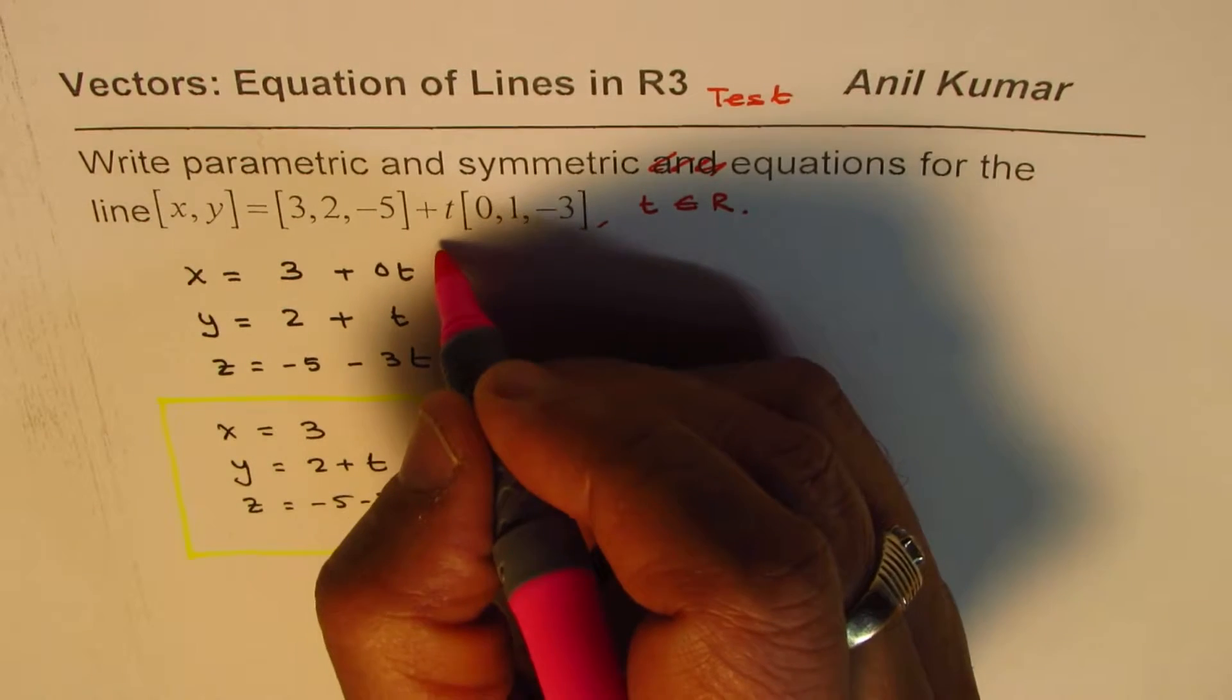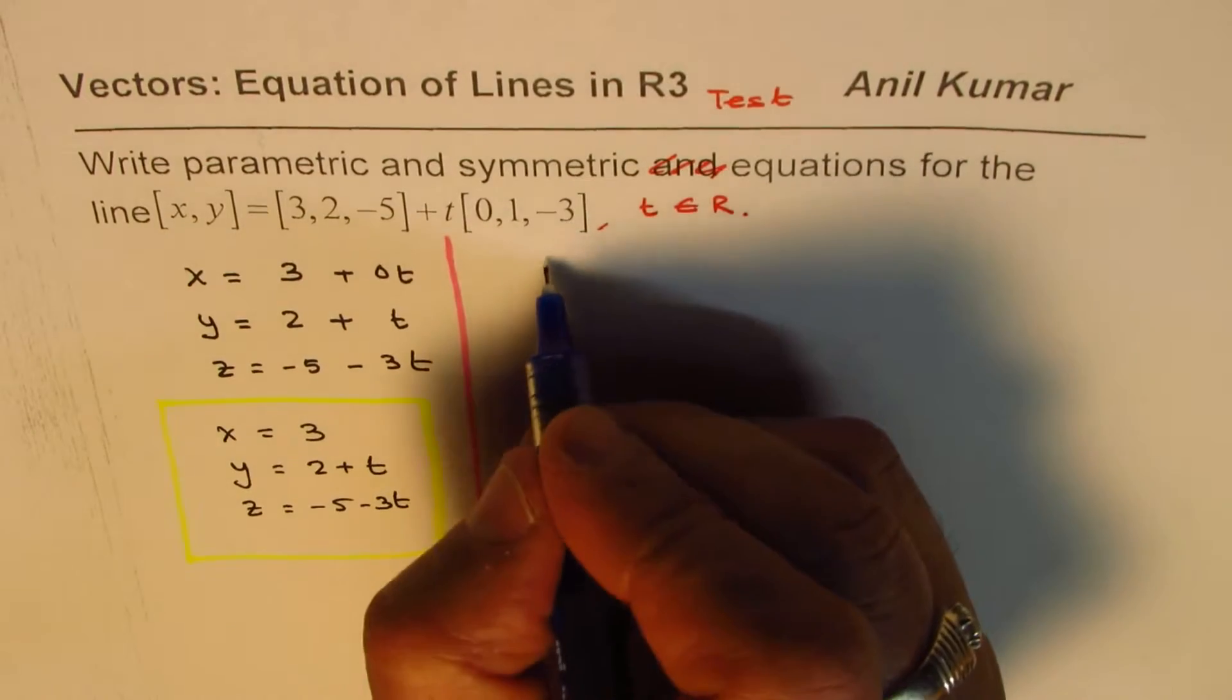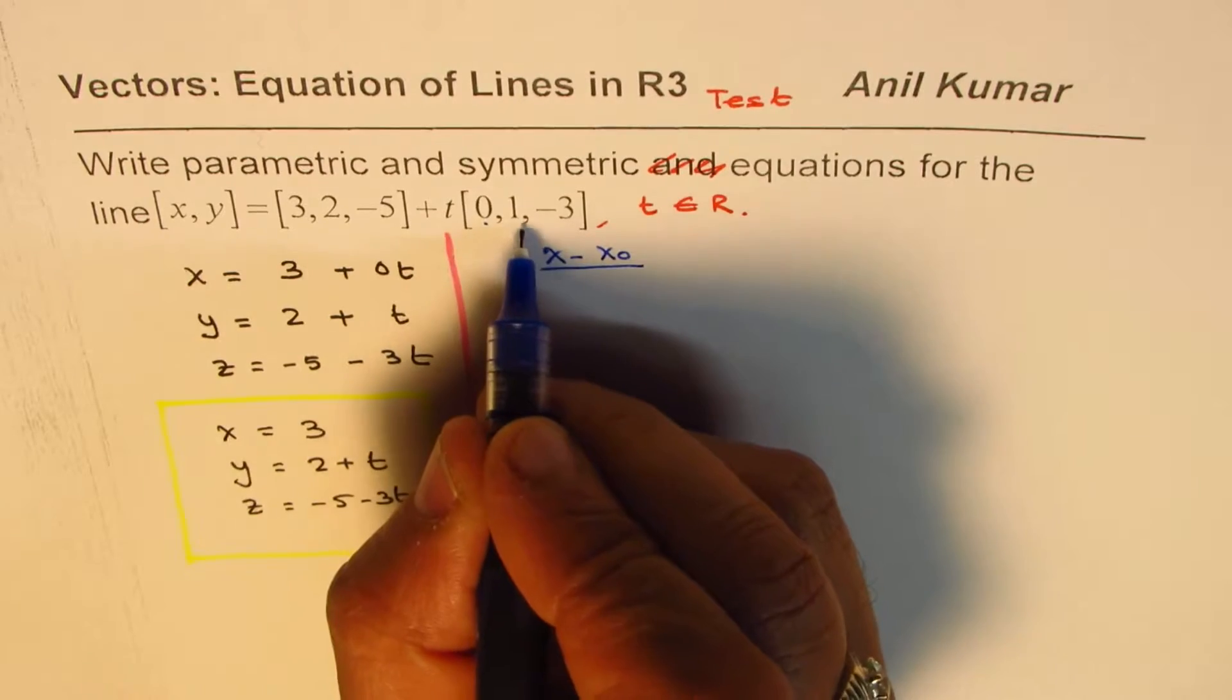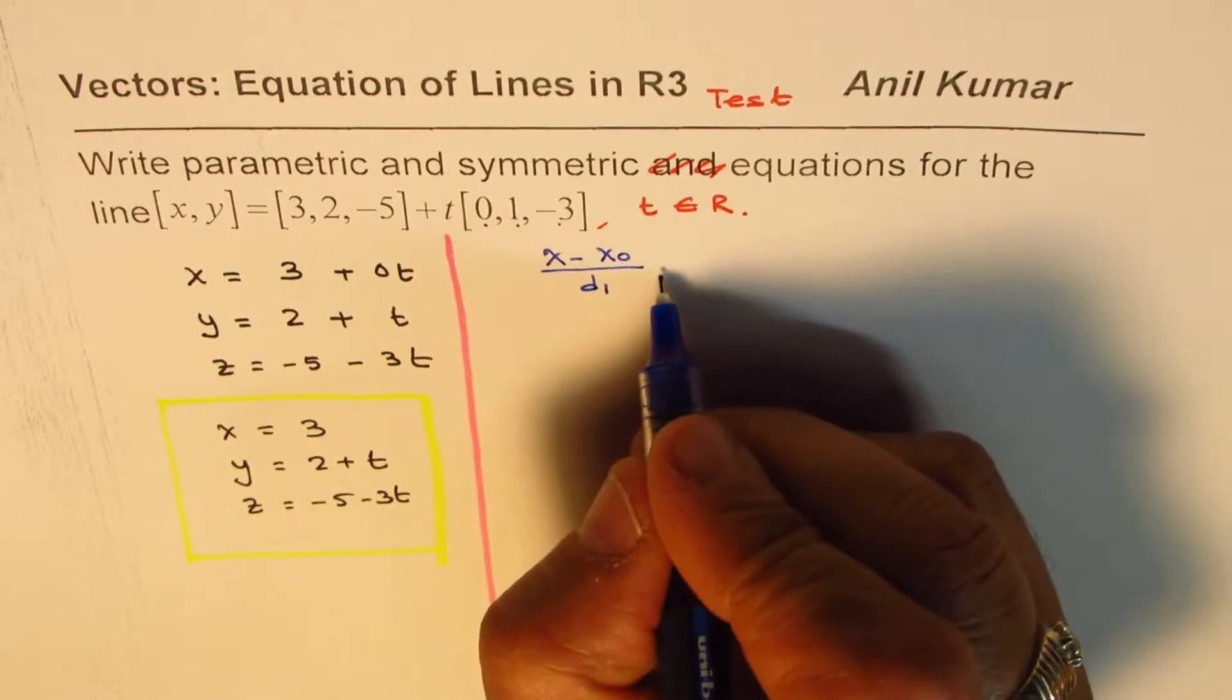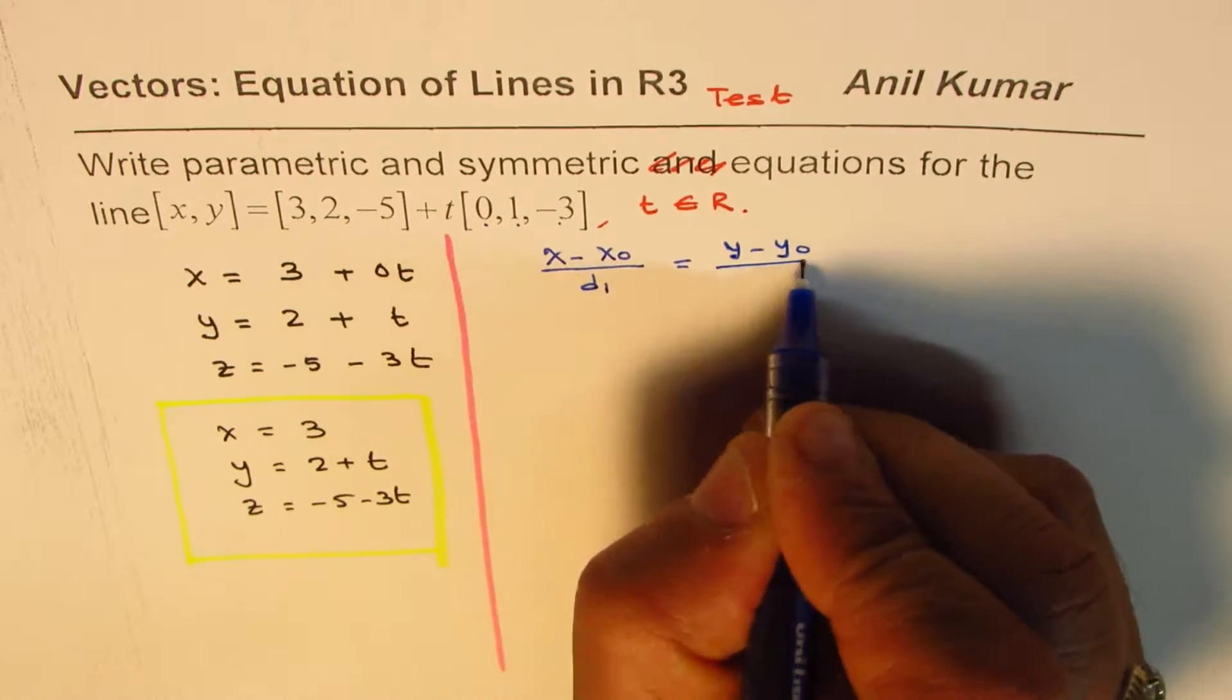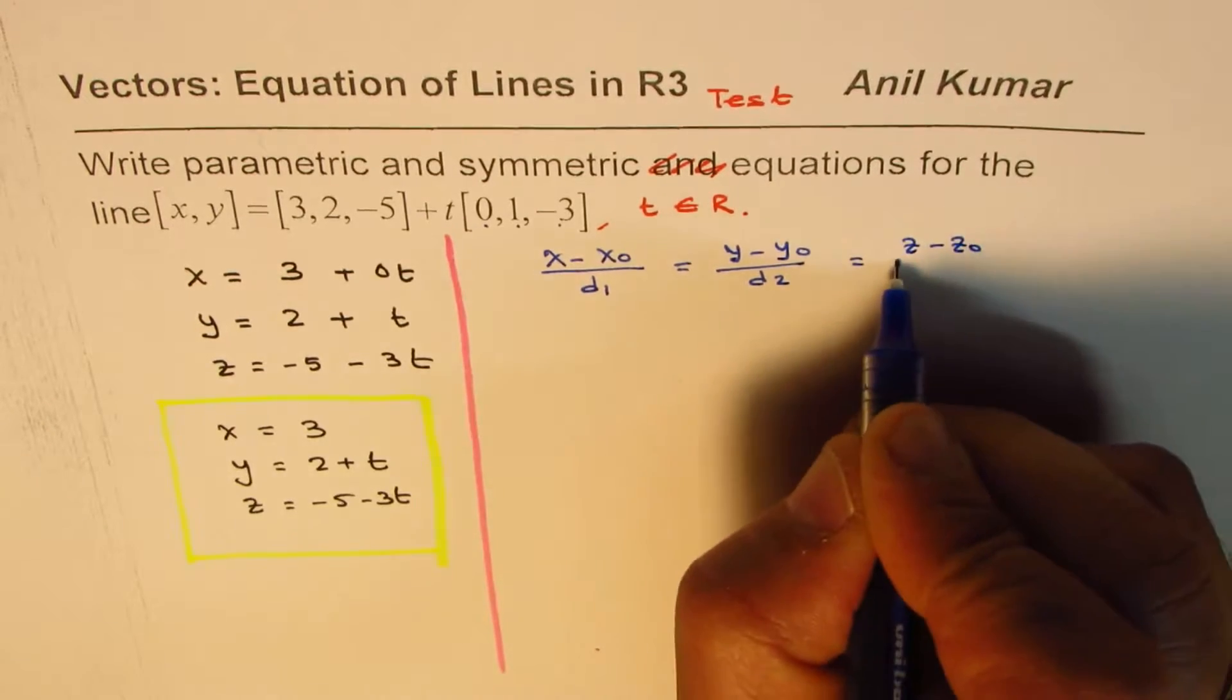Now let us see how to write it in symmetric form. The format of symmetric form is kind of like this: x minus x0 divided by d1 equals to y minus y0 over d2, equals to z minus z0 over d3.